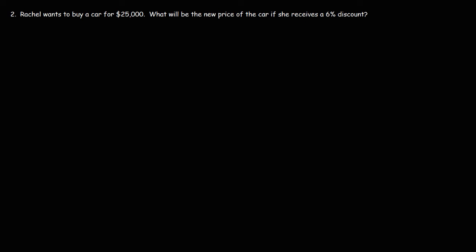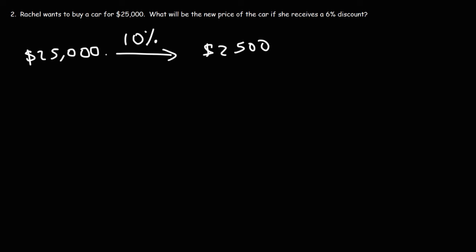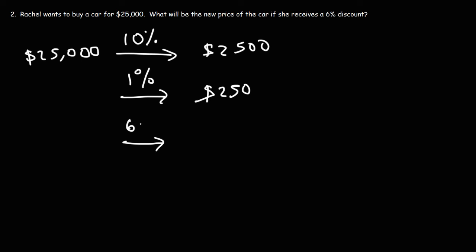Let's move on to number two. Rachel wants to buy a car for $25,000. What will be the new price of the car if she receives a 6% discount? Let's do it mentally. We know that 10% of $25,000 is $2,500 — just move the decimal one unit to the left. If 10% is $2,500, then 1% is $250, moving the decimal two units to the left. Since 6% is 6 times 1%, that's 6 times $250. Just like having six quarters equals $1.50, 6 times $250 is $1,500. So 6% of $25,000 is $1,500.